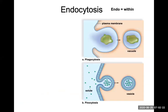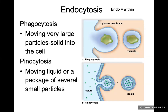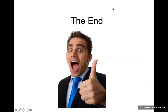Endocytosis — endo means within — is active transport bringing a large macromolecule inside the cell. There are two types: phagocytosis, which means cell eating, engulfs very large solid particles into the cell; and pinocytosis, which means cell drinking, moves liquid or a package of several smaller particles inside the cell. In both cases, the membrane closes or forms a vesicle around what's being transported. That's the end of this workshop — thanks for listening, and we hope to see you in a live Zoom session soon.